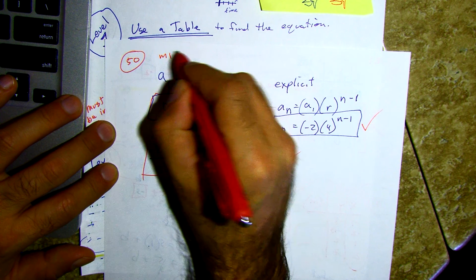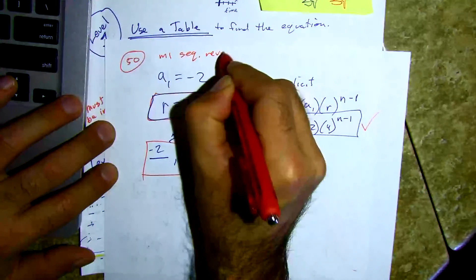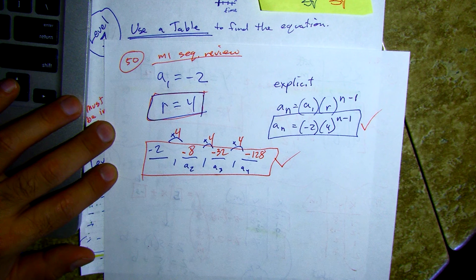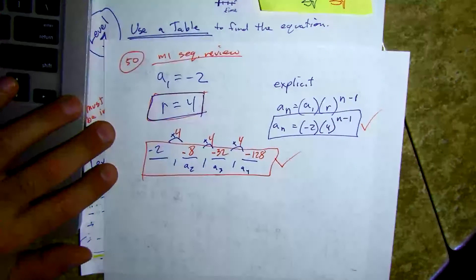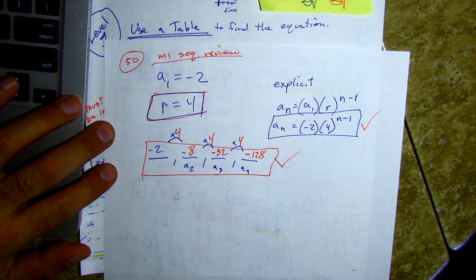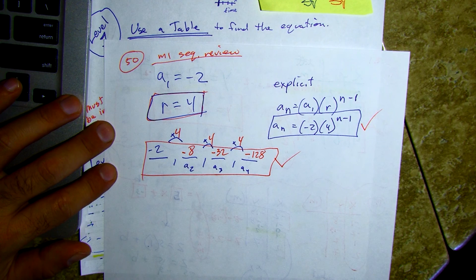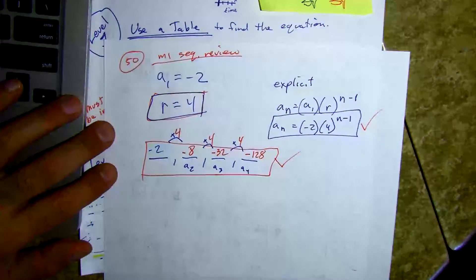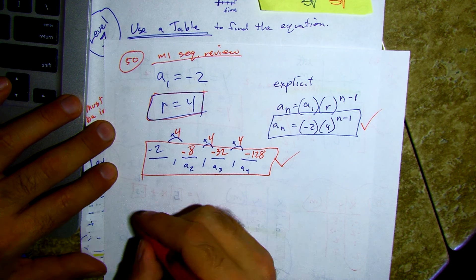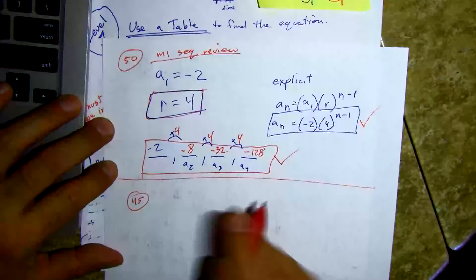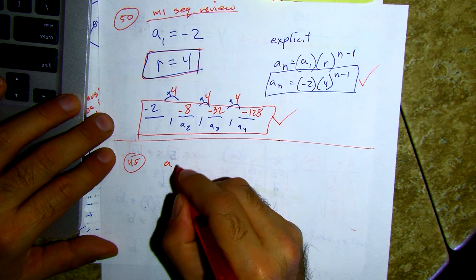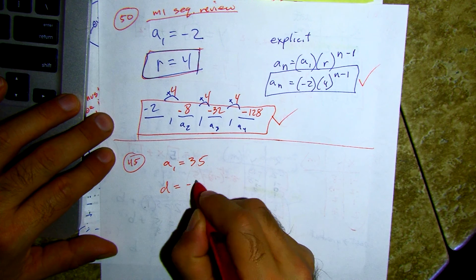We've got about four minutes. Let's look at sequences number forty-five. We have a sub one is thirty-five, d equals negative twenty — this is an arithmetic sequence. Find the explicit formula and the three terms after.